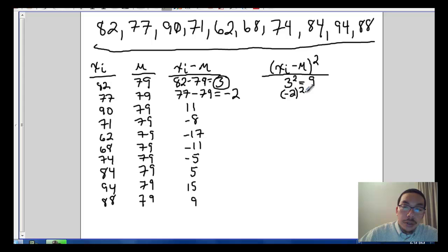Here negative 2 squared equals 4. And I don't need to write all the other ones out like that. I'll just give you the answers. 121, 64. 17 times 17 is 289. 11 squared is 121. Negative 5 squared is 25. Positive 5 squared is 25. 15 squared is 225, and 9 squared is 81.